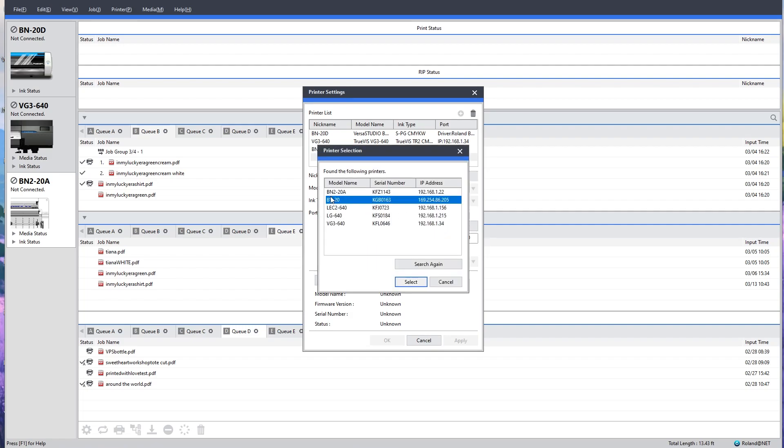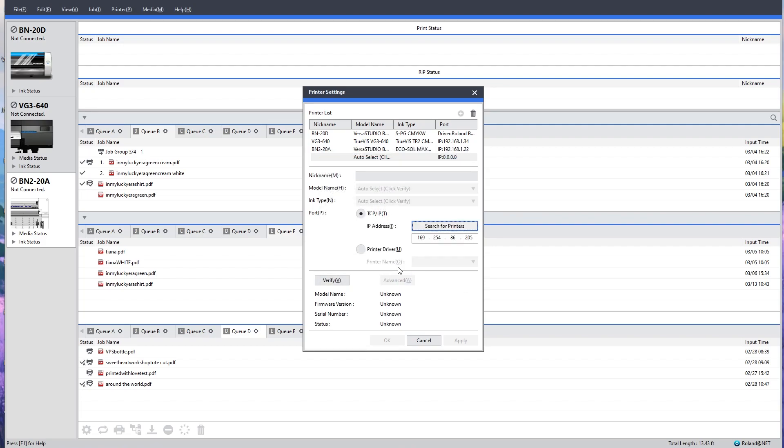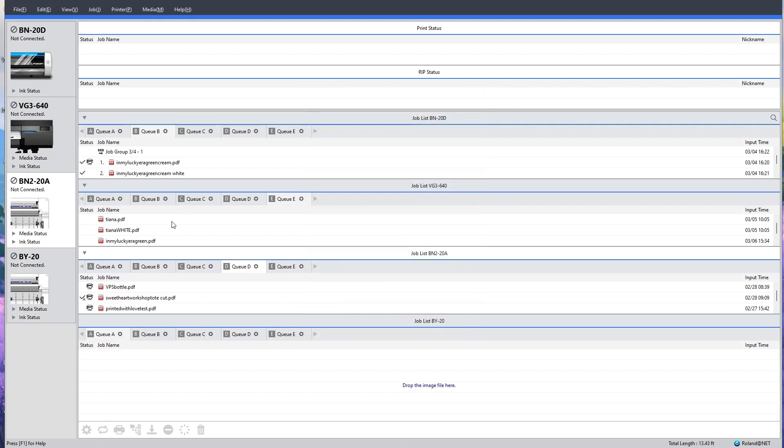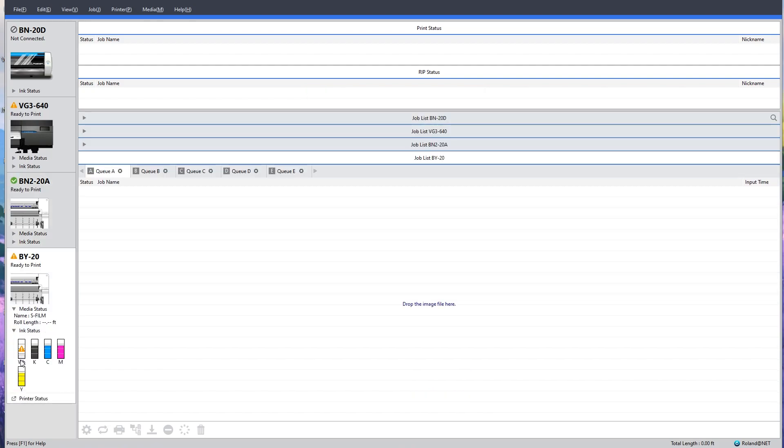So now you can see that my BY popped up and I can select it. If I verify this, it's going to double check that everything's accurate, then I can select OK. Now it's going to prompt me to download the printer driver. Now we can see on the left that my BY is ready to print.